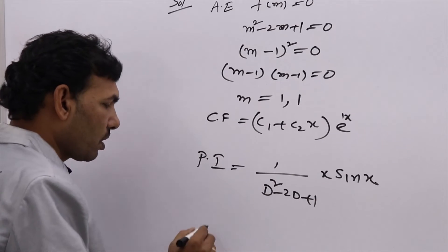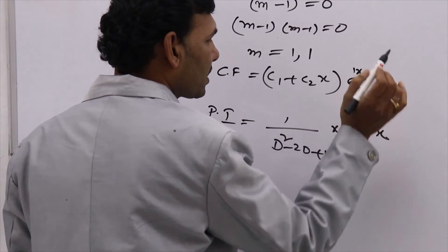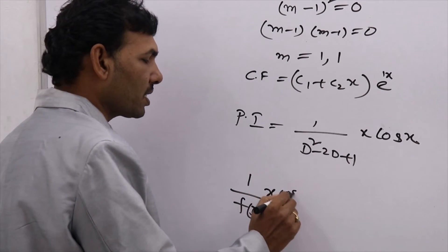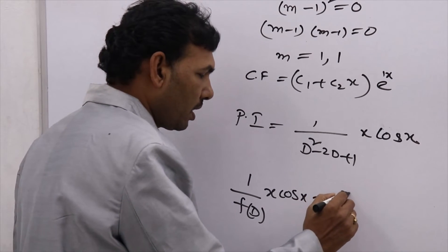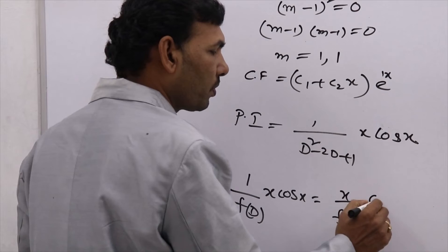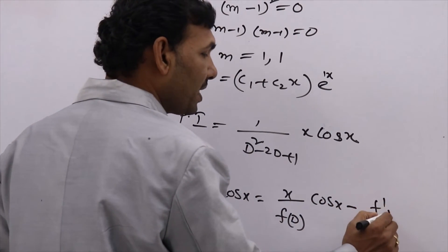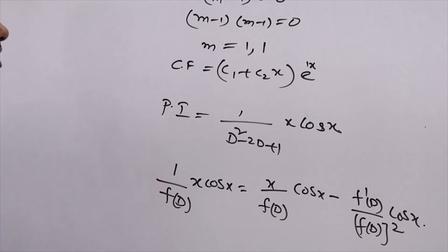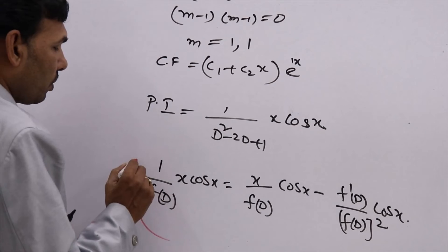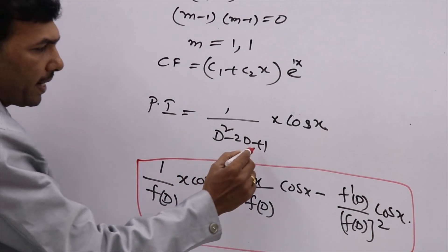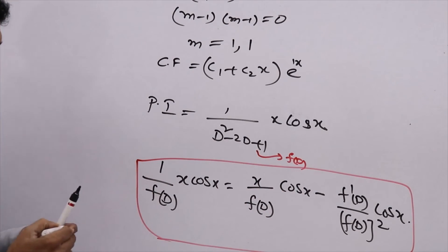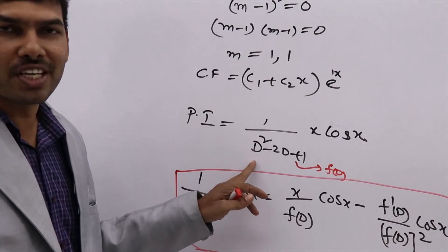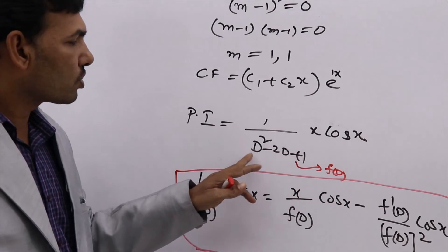Coming to the particular integral: PI = 1/(D²−2D+1) · x·cos(x). Write the formula: x by f(D) into cos(x) minus f'(D) by f(D) whole square into cos(x). In the place of f(D), write D²−2D+1. f'(D) is the differentiation of D²−2D+1, which gives 2D−2.